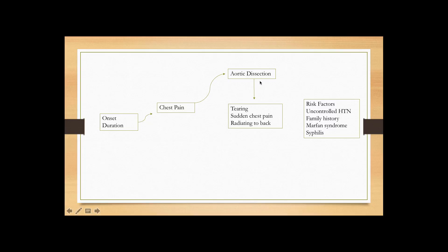Risk factors for aortic dissection include: the biggest one is long-standing uncontrolled hypertension leading to aortic dissection; family history of or personal history of Marfan syndrome; or history of syphilis, because syphilis causes aortic aneurysm which can then dissect. Although Marfan syndrome is a classic buzzword for aortic dissection, uncontrolled hypertension is much more common in the general population. In order of more common to less common, that is how the risk factors go.